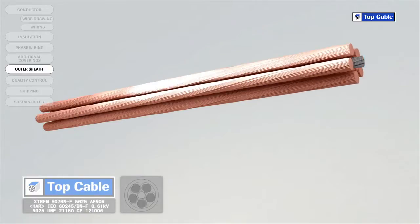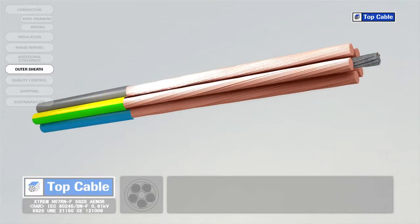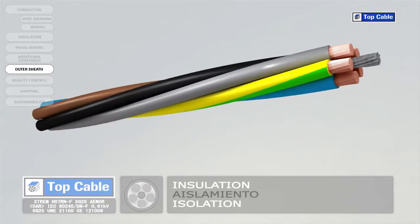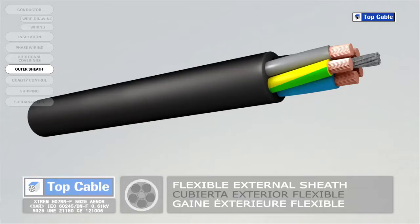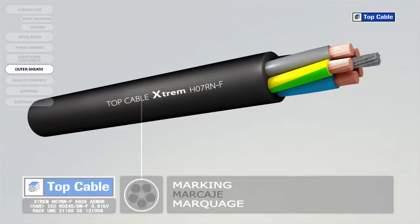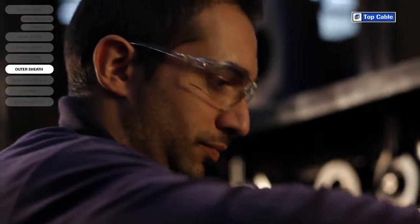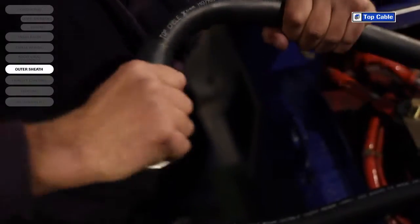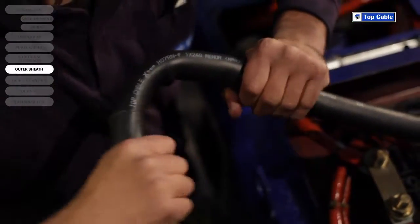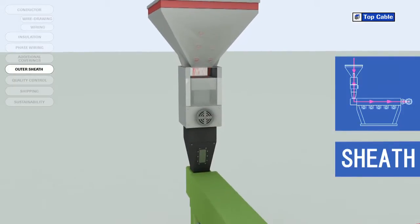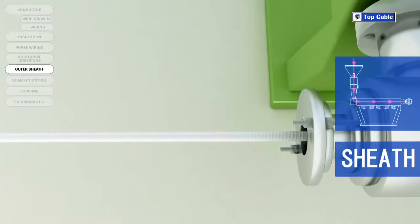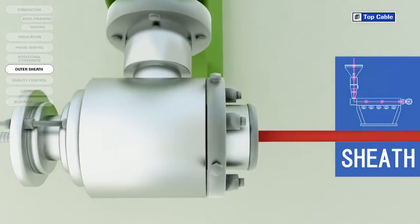Cables usually have an outer polymer covering for protection, called the outer sheath. The sheath protects the conductors and their insulation from external elements which may change their electrical properties, such as moisture. It also protects them from mechanical aggression which may occur during the installation of the cable. As with the insulation, the outer sheath can be made from a thermoplastic or a thermosetting plastic, and is applied via a process of extrusion at high temperature. The material chosen depends on the required protection level, the final flexibility of the cable, and the work environment.